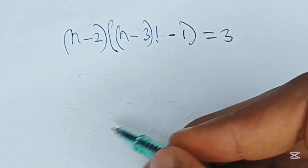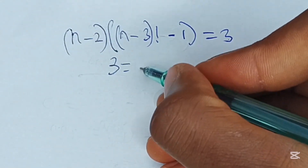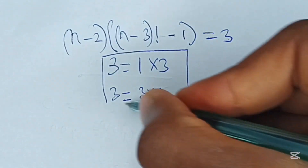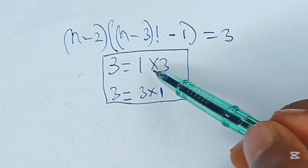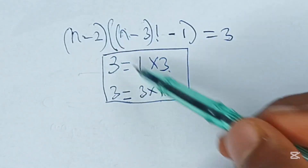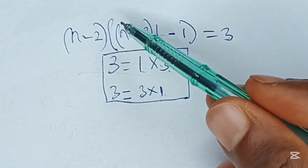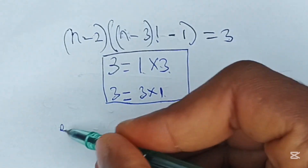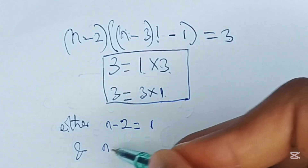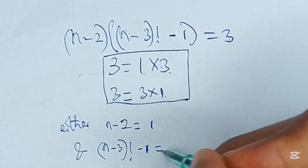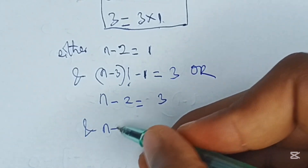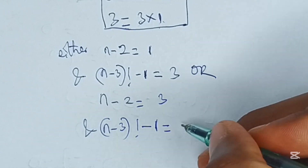At this point, you can ask yourself: 3 can be expressed as 1 times 3, or also as 3 times 1. These are the factor pairs for 3. So we are going to equate: either n minus 2 is equal to 1 and n minus 3 factorial minus 1 is equal to 3, or n minus 2 is equal to 3 and n minus 3 factorial minus 1 is equal to 1.